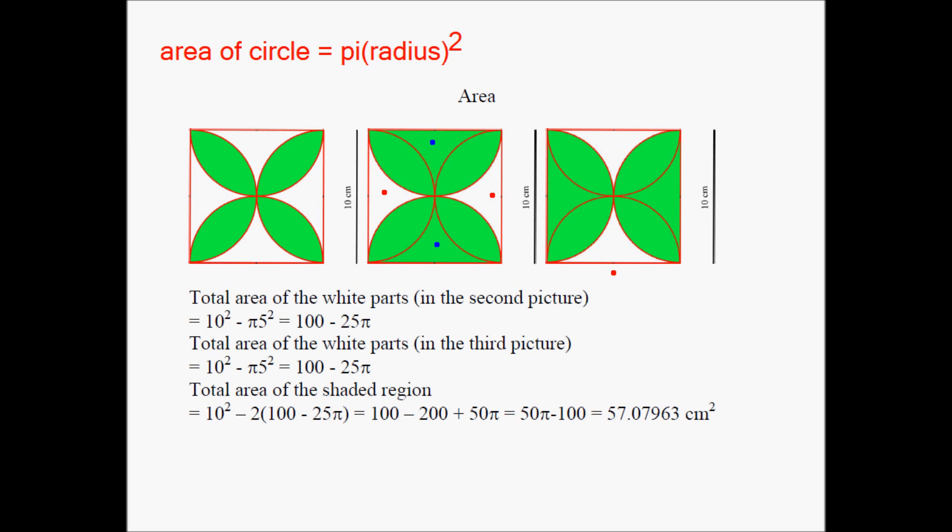You can apply the same principle here, in the third picture, and find the sum of the areas of these two white pieces, and of course, they're going to be exactly the same as before, which is 100 minus 25 pi. So from the second and the third picture, I can conclude that the sum of the areas of these two white pieces is 100 minus 25 pi, and the sum of the areas of these two white pieces is also equal to 100 minus 25 pi.